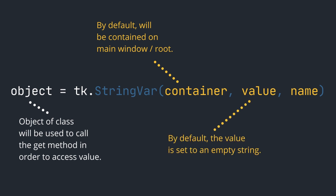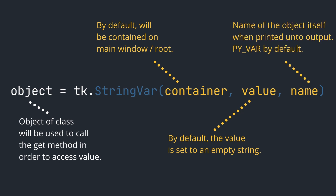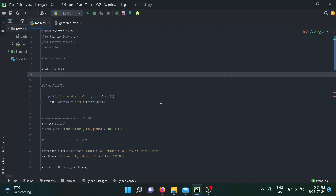Here's how you initialize a StringVar object: the container is the parent widget — by default the main window, which I call root. The value parameter lets you set an initial value; by default it's an empty string. The name is simply the TCL name of the object — when you print the object to the console it shows a specific name, or 'pyvar' by default.